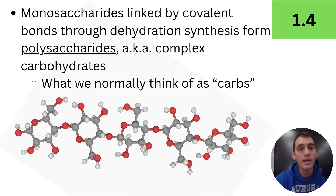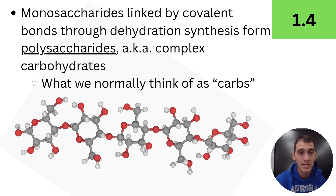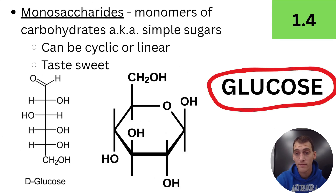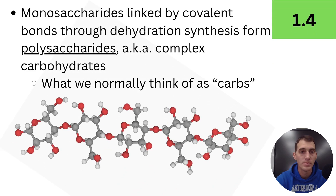Monosaccharides are linked by covalent bonds through dehydration synthesis, and they form polysaccharides — poly meaning many, saccharide meaning sweet. Polysaccharides are what are known as complex carbohydrates. So if monosaccharides are simple sugars, polysaccharides are complex carbs, and polysaccharides are normally what you think of as carbs when you eat carbs.